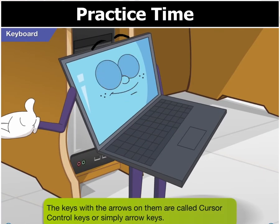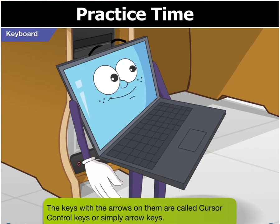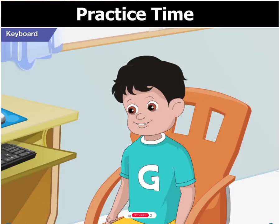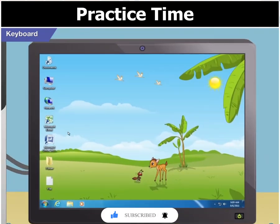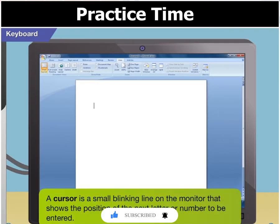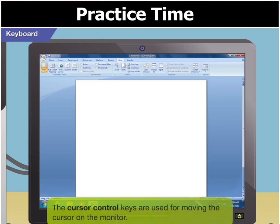These arrow keys are also called cursor control keys. Cursor, what's a cursor? Well, the small blinking line that you see on the monitor is called the cursor. It shows the position of the next letter or number to be entered. The cursor control keys are used for moving the cursor on the monitor.